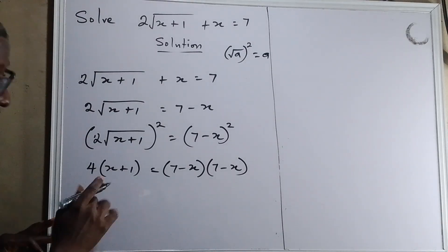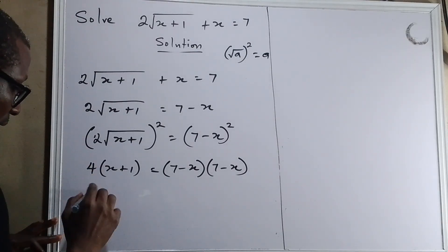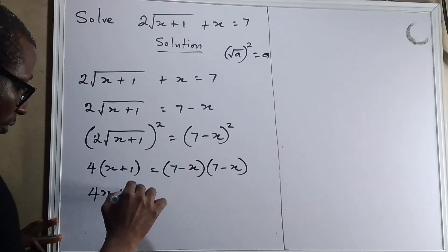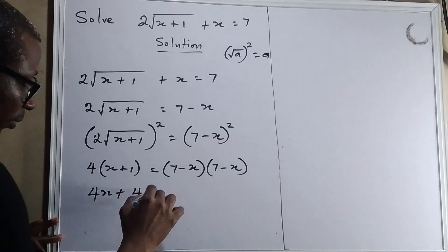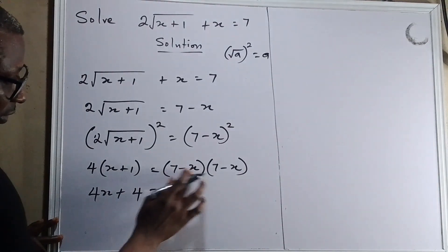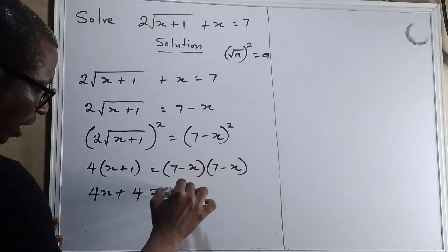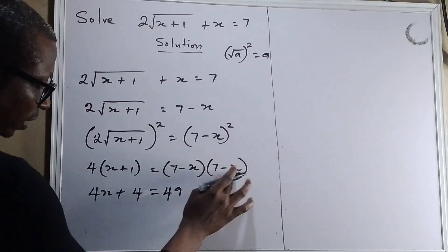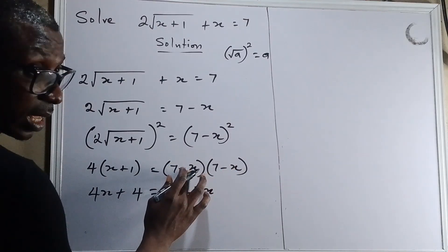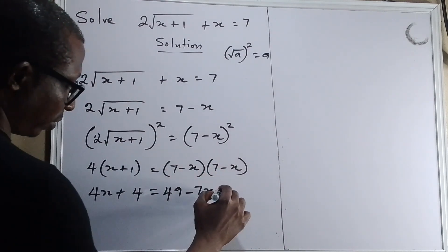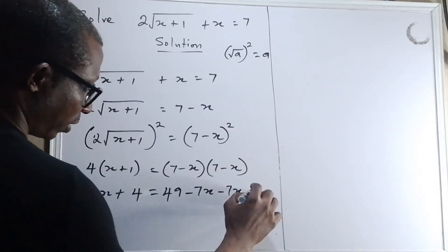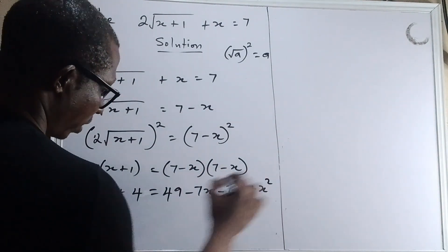Let's open this bracket. We have 4 times x, that's 4x, plus 4 times 1, that's 4. Now let's expand the right side: 7 times 7 is 49, then 7 times minus x is minus 7x, minus x times 7 is minus 7x, and minus x times minus x is plus x squared.